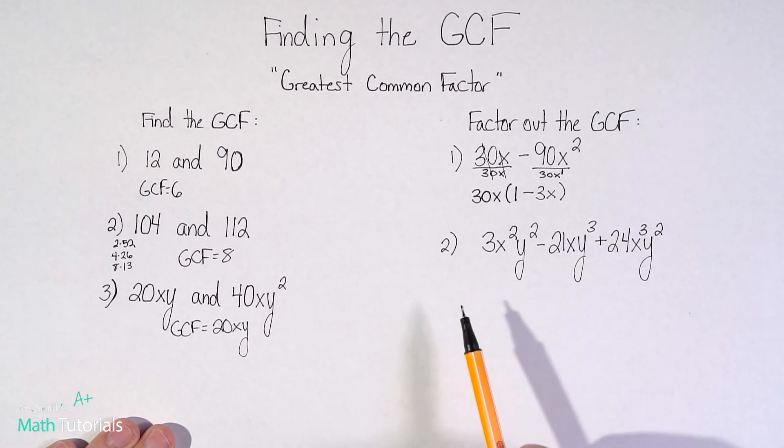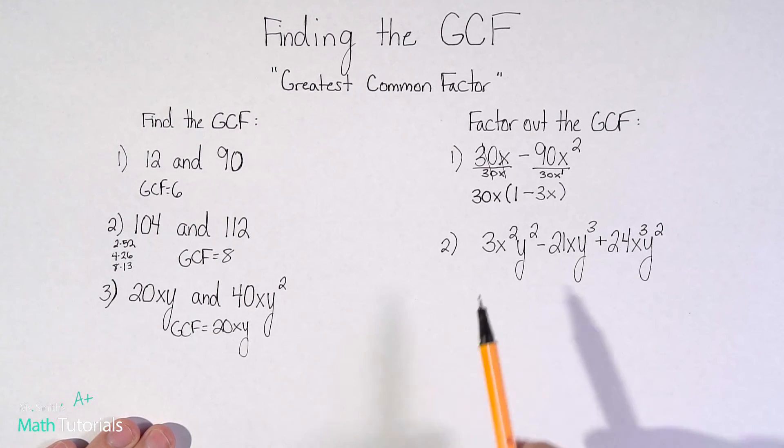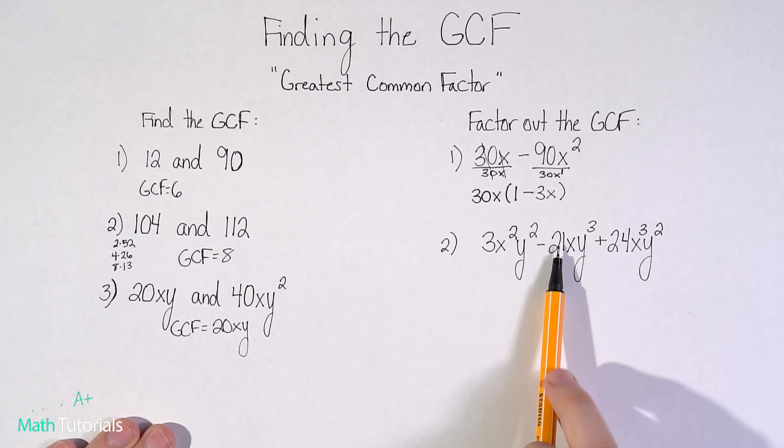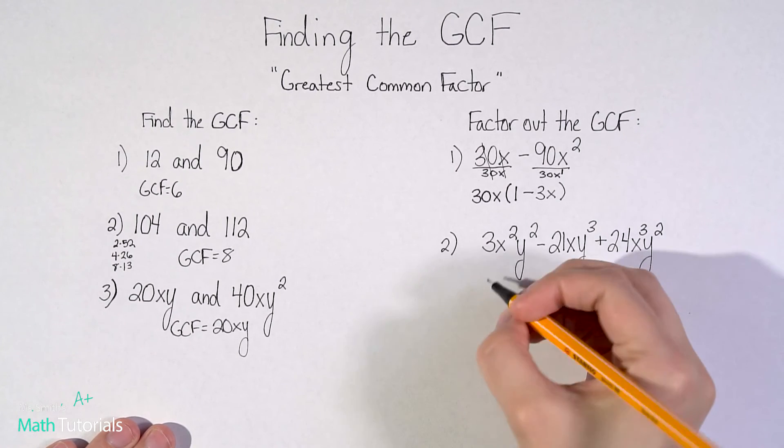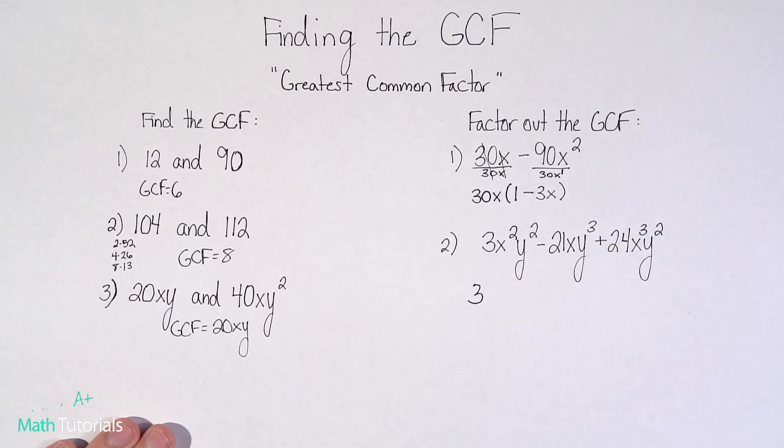This one has three terms. So starting with just the number, let's see, I've got three, 21 and 24. Save yourself some time, just start with the lowest number. So three, I know three goes into three. Does three go into 21? Yeah, seven times. Does three go into 24? Yeah, eight times. So I know three is going to be my GCF number.